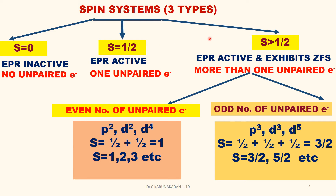There are three types of spin systems in EPR spectroscopy. S equal to zero means no unpaired electrons, therefore EPR inactive — we have already studied this. For species with one unpaired electron, S equal to 1/2, it is EPR active. The third case is S greater than 1/2, where there are more than one unpaired electrons; these species are EPR active and further they exhibit zero field splitting.